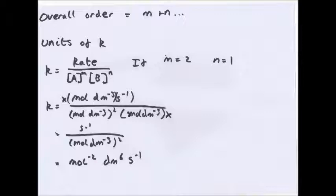over mole per dm cubed squared, because A is to order two, and then mole per dm cubed just one, because B is to order one. That means on the top you have a mole per dm cubed, on the bottom you have a mole per dm cubed, so you can cancel it out, leaving s minus one on the top, mole per dm cubed squared on the bottom. Which means, you've then got s minus one over mole two dm minus six, and then just to make it look neater, you move the mole two dm minus six up, so you change the signs of the powers, mole minus two dm six s minus one.